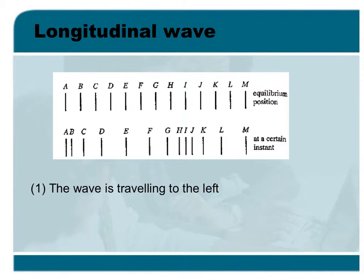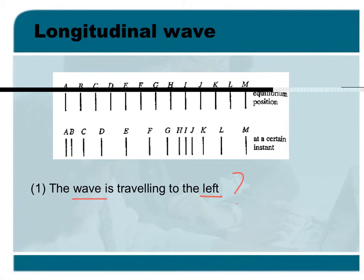Let's look at the first sentence. The wave is traveling to the left. Is it true? When we say the wave is traveling to the left, that means the whole pattern is traveling to the left.